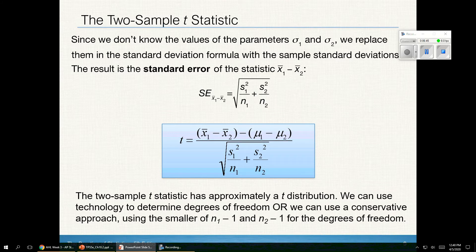This is approximately a t-distribution with degrees of freedom either matched by what your calculator would tell you, which is obtained with a complex formula that you don't need to know. Or you can use the conservative approach, taking the smaller of these two sample sizes and subtracting one, and using that for the degrees of freedom.